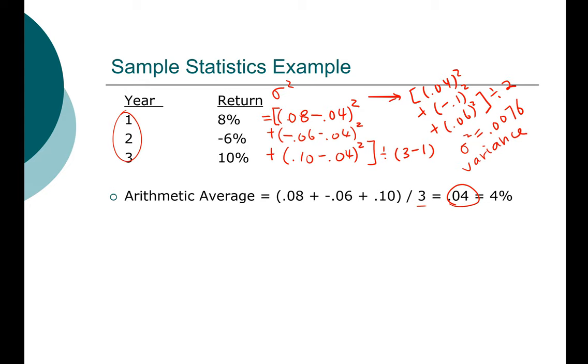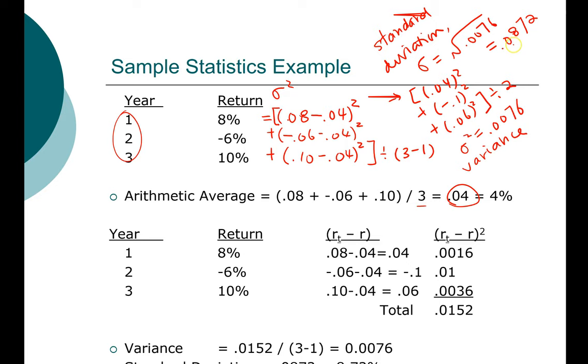Last, we can compute the standard deviation. Remember that the standard deviation is the square root of the variance. So the standard deviation is simply the square root of 0.0076, which is 0.0872, and that's 8.72 percent.